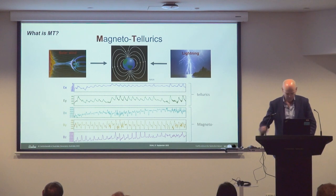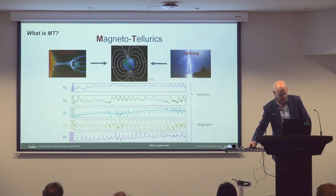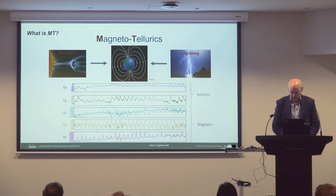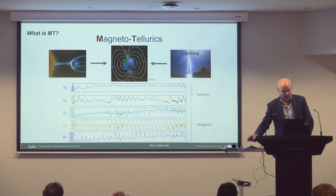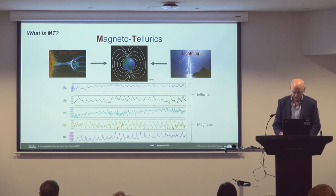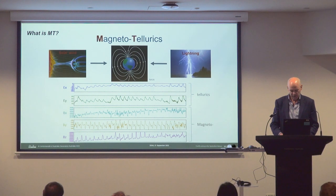MT measures at the Earth's surface the natural time variations of the magnetic field — the so-called 'magneto' part of magnetotellurics — and of the electric fields that the changing magnetic fields induce. These time series show typical variations recorded at an MT site over a four to five week period, so there's something like 40 days worth of data shown.